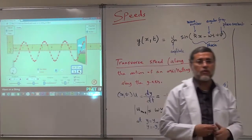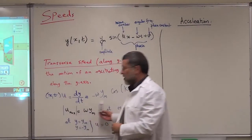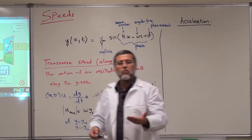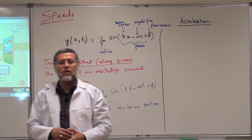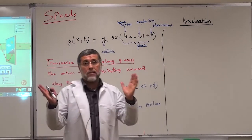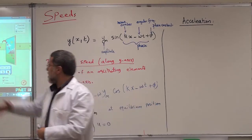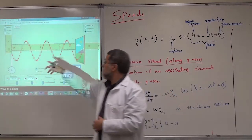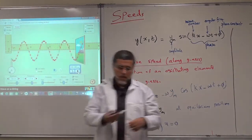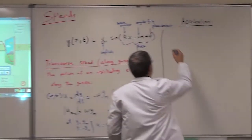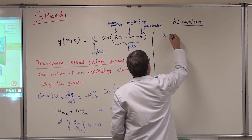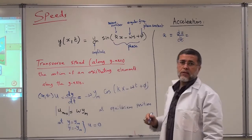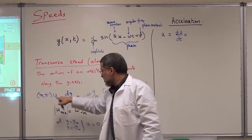Now we go to the acceleration of the particles. Since we have a velocity of the particles and velocity is changing — it goes from a maximum value to zero — so we have acceleration. Since the wave is moving at constant speed, its acceleration will be zero. But we have acceleration for the particles which are moving up and down. To find the acceleration of the particles, A, we have to write du over dt — that's the first derivative of the transverse velocity.